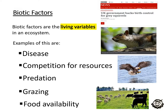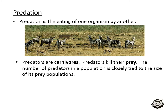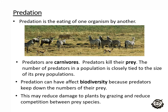There is research and work being done in wildlife conservation in the UK, so if you're interested in going into work like that, there's definitely stuff to be done. Looking at predation — this is the eating of one organism by another. Predators are carnivores; they kill their prey. The number of predators in a population is closely tied to the size of its prey population. Predation can have a big effect on biodiversity because predators keep down the numbers of their prey, which may reduce damage to plants by grazing and reduce competition between prey species.